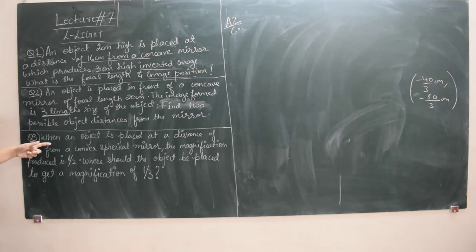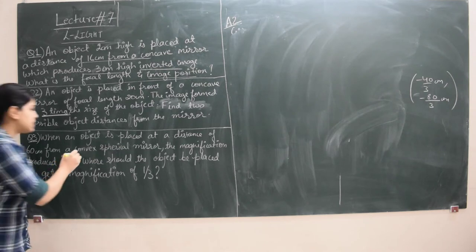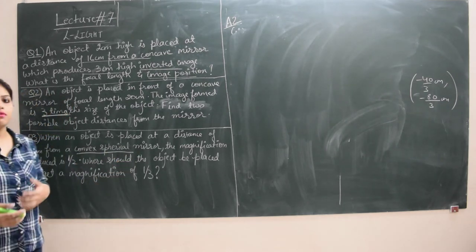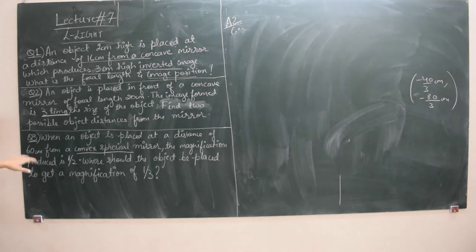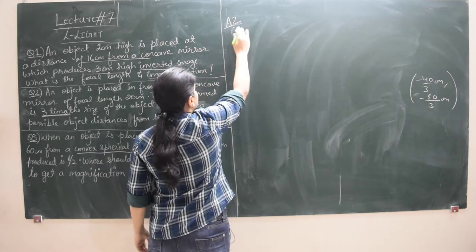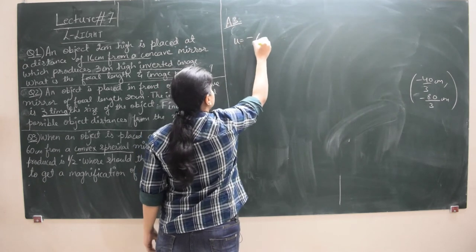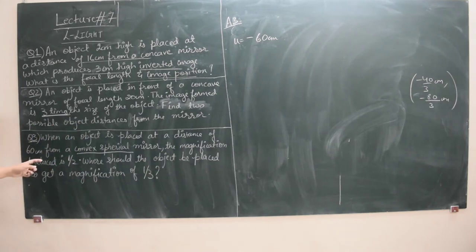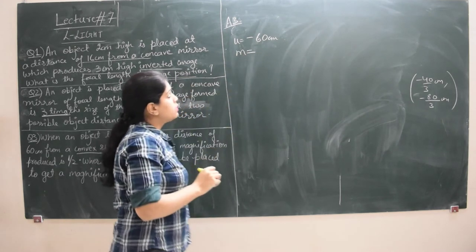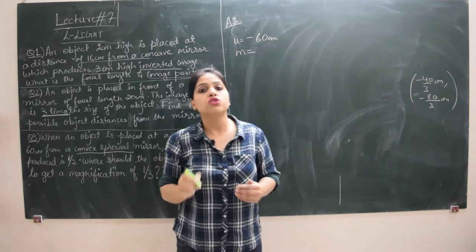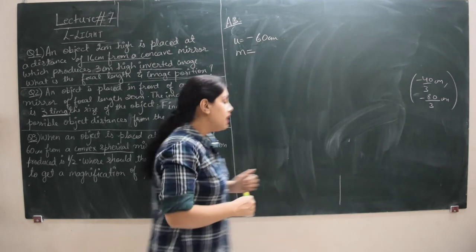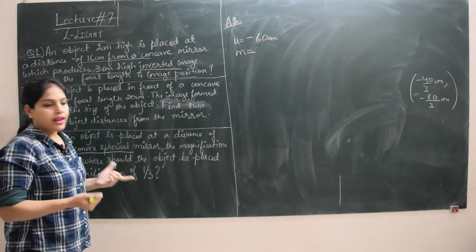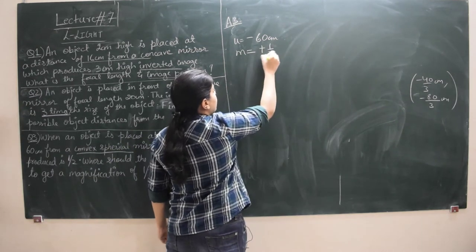When an object is placed at a distance of 60 cm from a convex spherical mirror — remember the mirror is convex now, so focal length, radius of curvature, everything will be virtual, and the image will also be virtual. So U is minus 60 cm. From this convex spherical mirror the magnification produced is half. Since the image is always virtual and erect for a convex mirror, magnification is plus half.